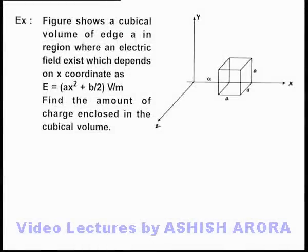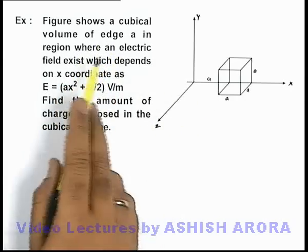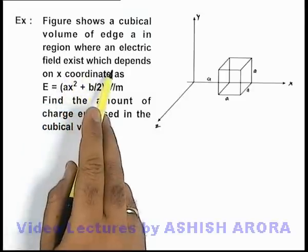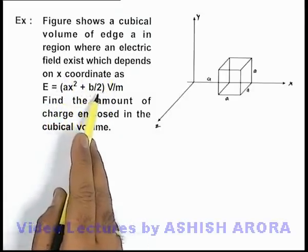In this example, the figure shows a cubical volume of edge a, in a region where an electric field exists which depends on x coordinate as E = ax² + b/2.